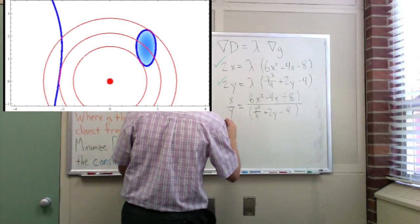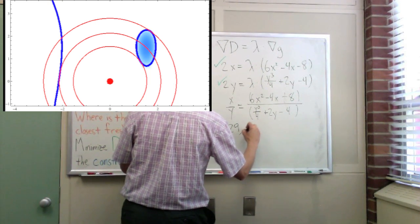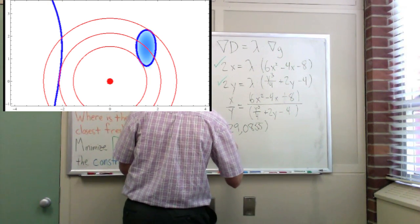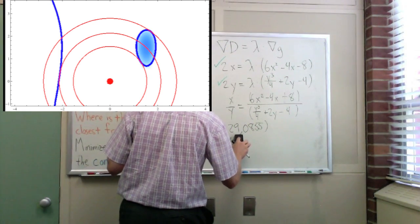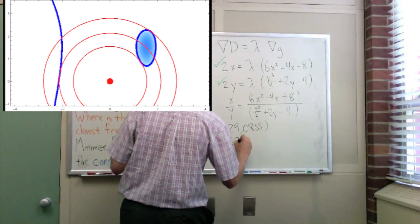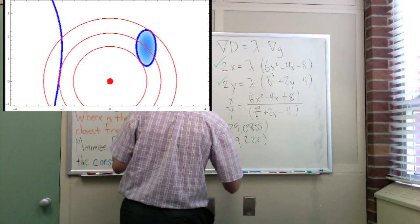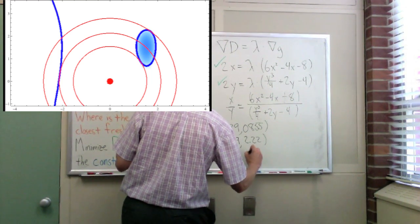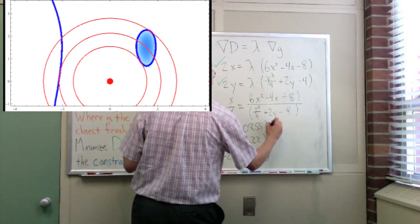Three solutions in xy form, that's 1.29 and 0.855, 1.69 and 2.22, and then the third one is negative 2.12, rounded off of course, and 0.268. Those are our three solutions.